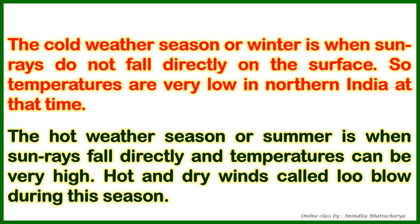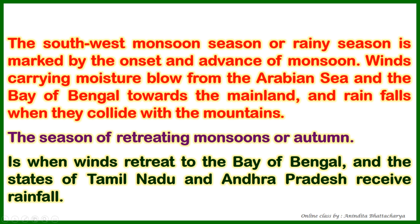During the cold weather season, sun rays do not hit the surface vertically — they come at an incline — so temperature in northern India is low. In the hot weather season, sun rays fall directly and the temperature is very high. Hot and dry winds called 'loo' blow during this season. The southwest monsoon is also called the rainy season or the onset and advance of monsoon season.